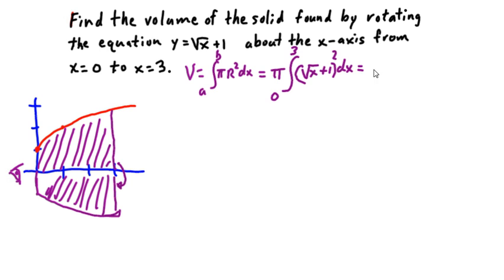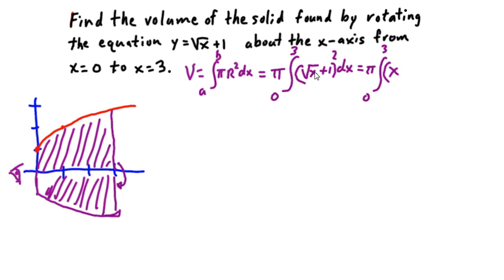Multiplying this out, we're still going to have pi out front, from 0 to 3. Square root of x squared is just x. Then we FOIL: we get plus 2 times square root of x, which is 2x to the one-half power. Plus 1. Times dx.